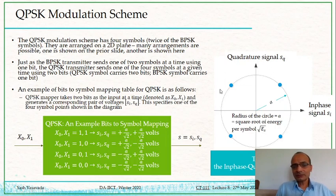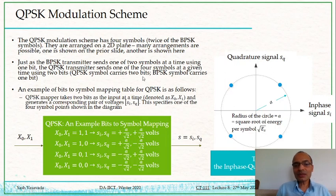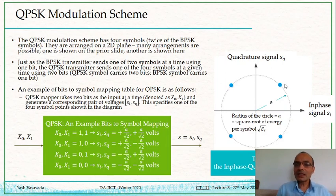There are other schemes possible as well. Just as the BPSK transmitter sends one of two constellation symbols using one bit, for QPSK the transmitter sends one of four symbols and needs two bits. So each BPSK symbol carries one bit of information, whereas each QPSK symbol carries two bits of information because there are four possible symbols.